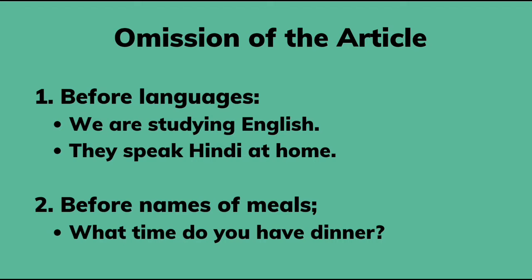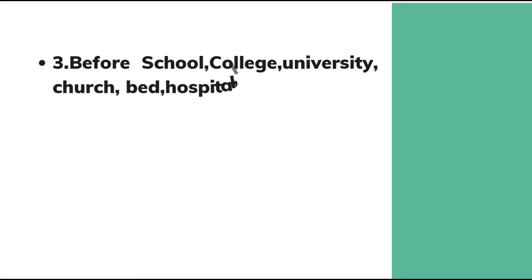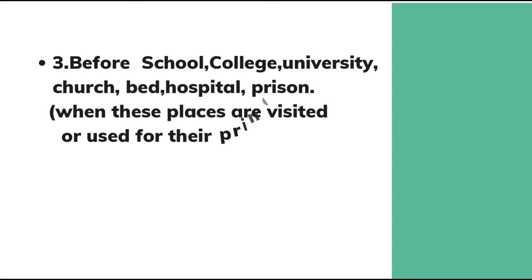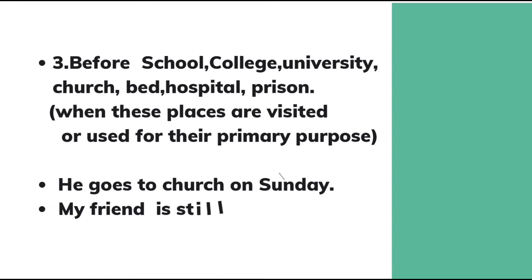Next is before names of meals, when used in a general sense. For example: 'Dinner is ready,' 'What time do you have dinner?' However, we use 'a' when there is an adjective before breakfast, lunch, dinner, etc. And we use 'the' when we specify - like 'I had a late lunch today.'